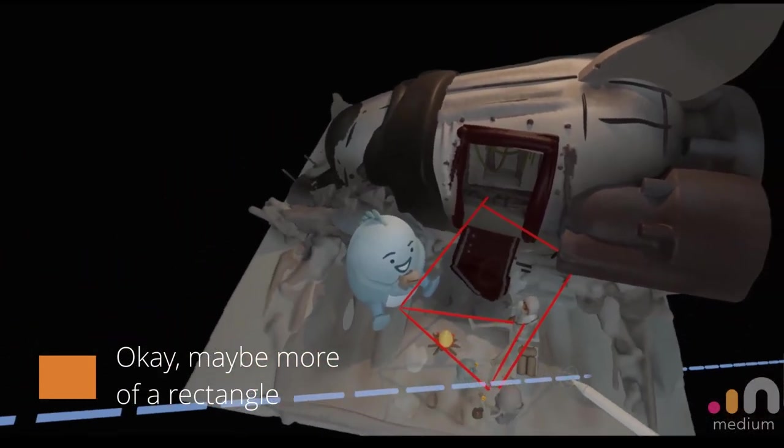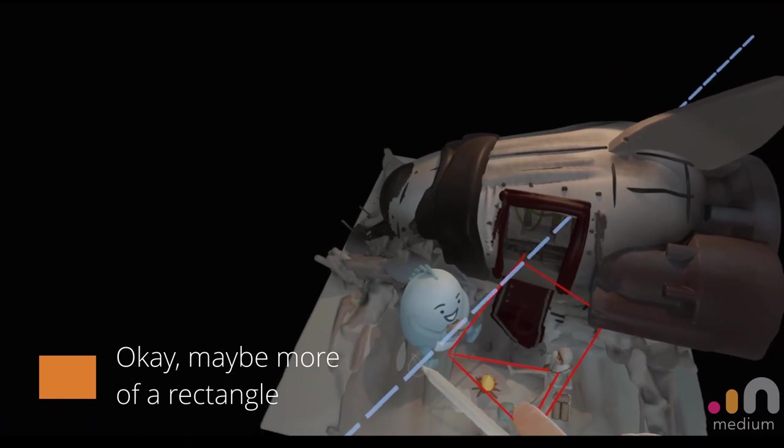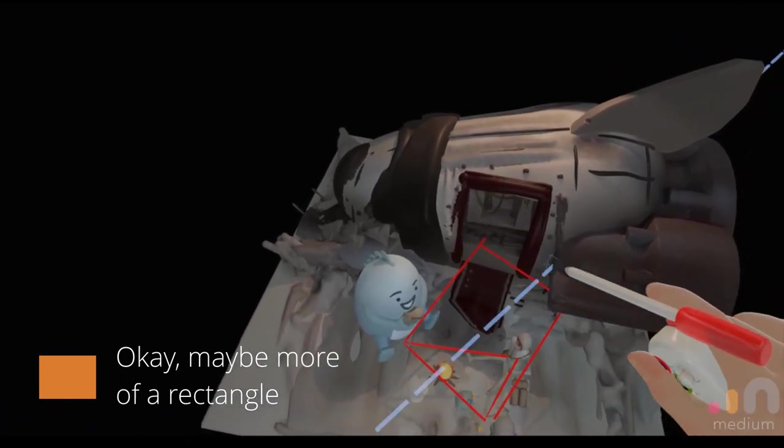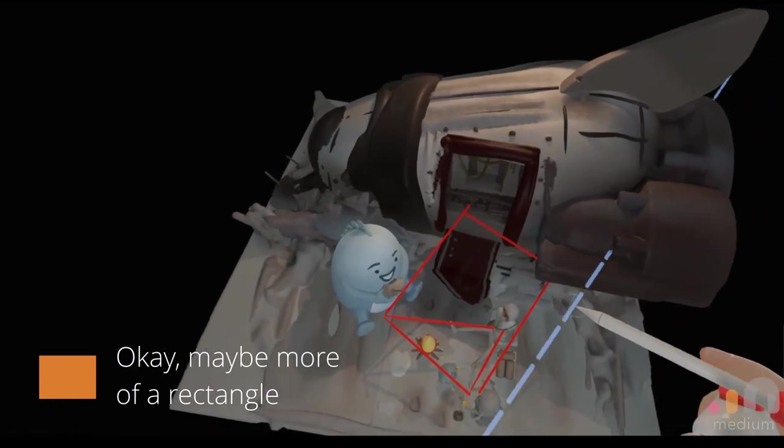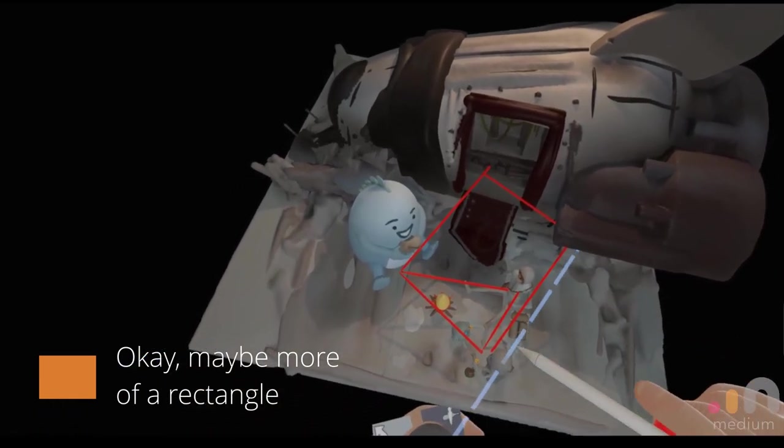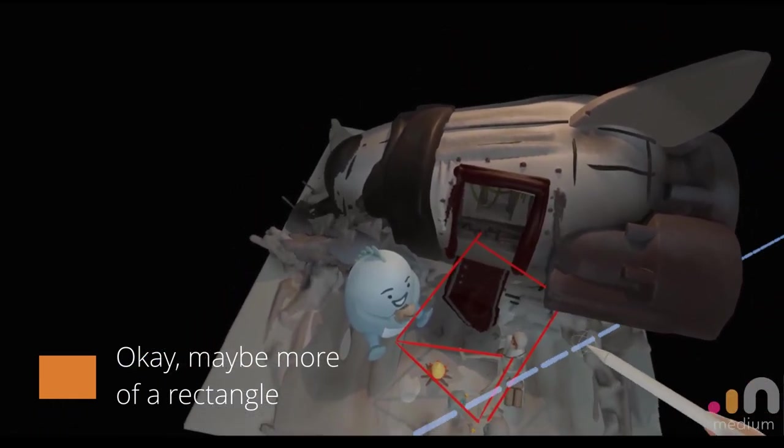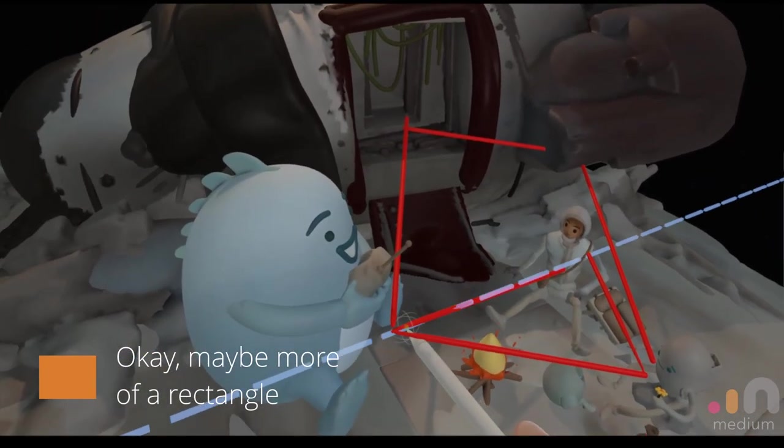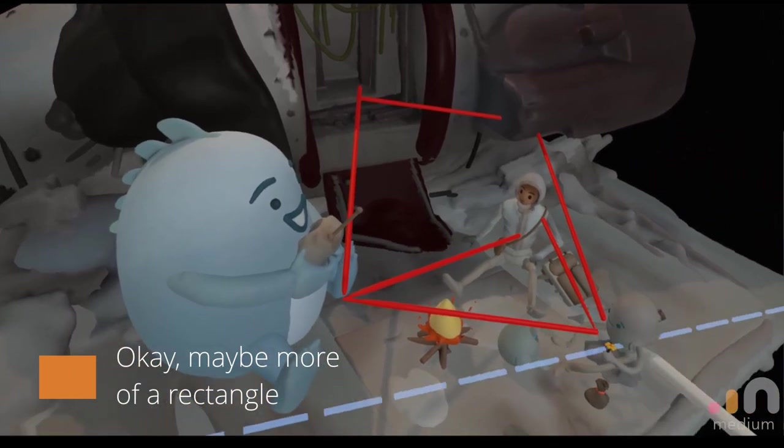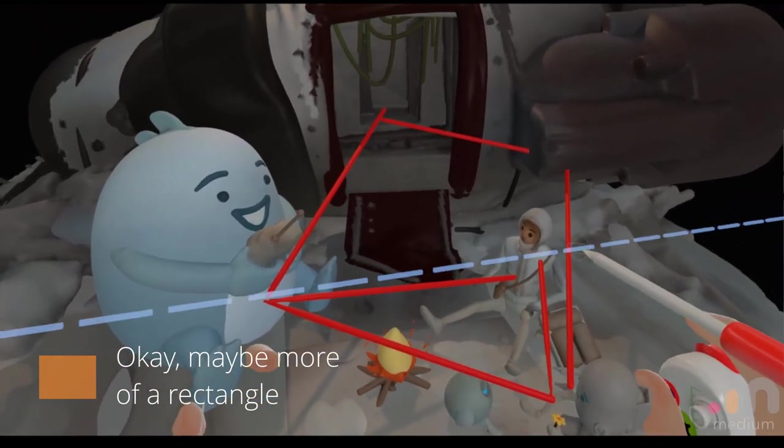But if I were to zoom out a bit, you can see the way I laid it out is like this: this guy, followed by the ship, and these two other characters here in the scene. And within this, I kind of build a triangle to just have that little feedback loop.